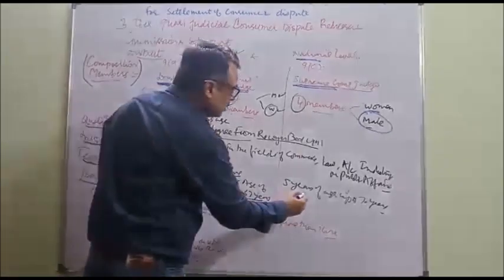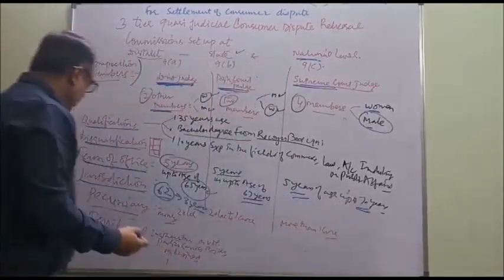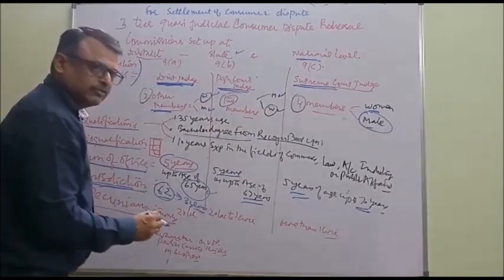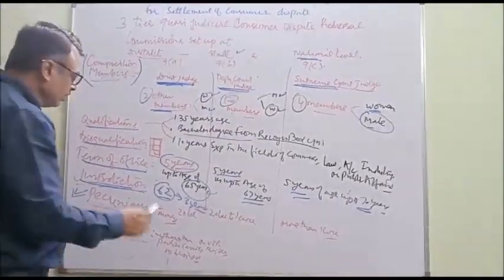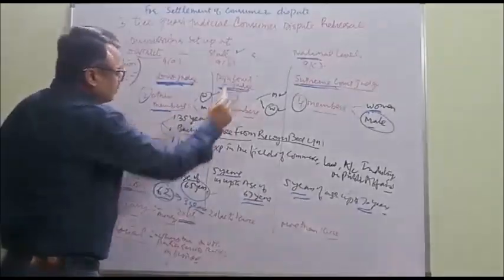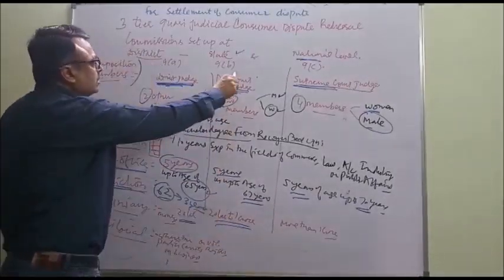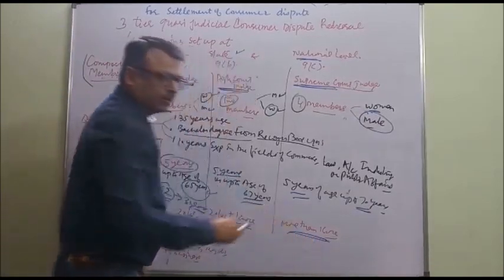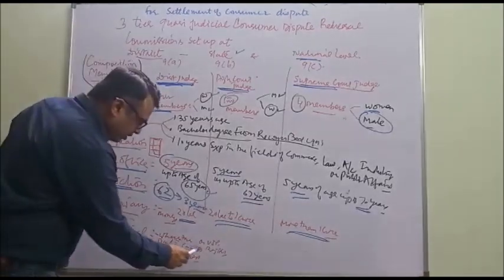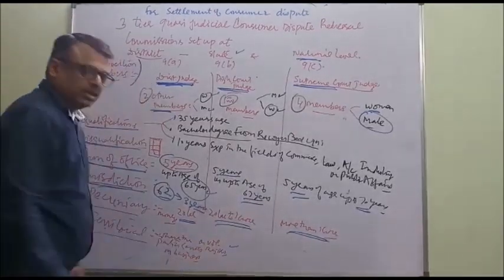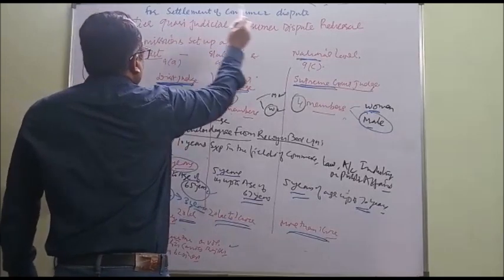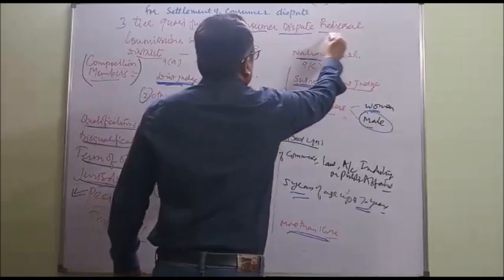In the case of National Commission, the age limit is 70 years. Now, jurisdiction: there are two types. First is pecuniary jurisdiction, relating to the value of the claim. Where the value of the claim does not exceed 20 lakhs, the claim should be instituted with the District Forum. If the value of the claim is 20 lakhs to 1 crore, the claim should be instituted with the State Commission. If the claim is more than 1 crore, it should go to the National Commission. The other is territorial jurisdiction, which means where the parties voluntarily reside or where the parties carry on their business.